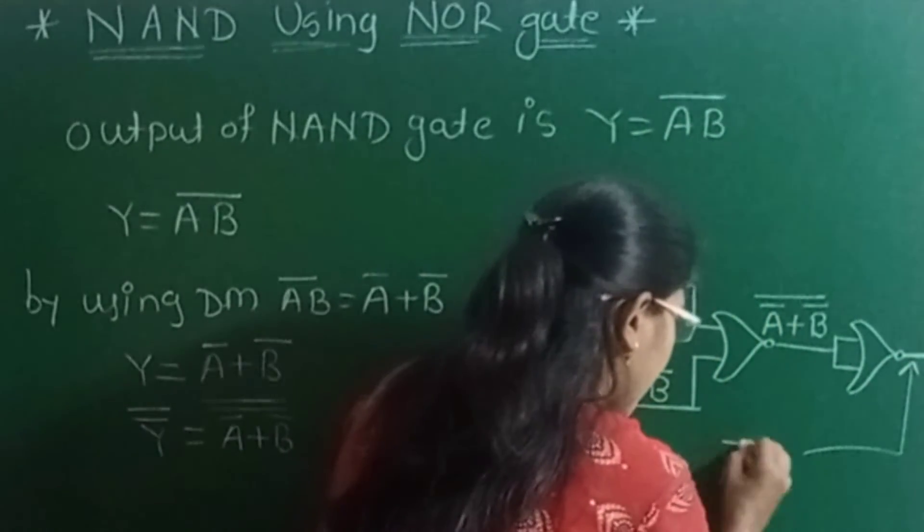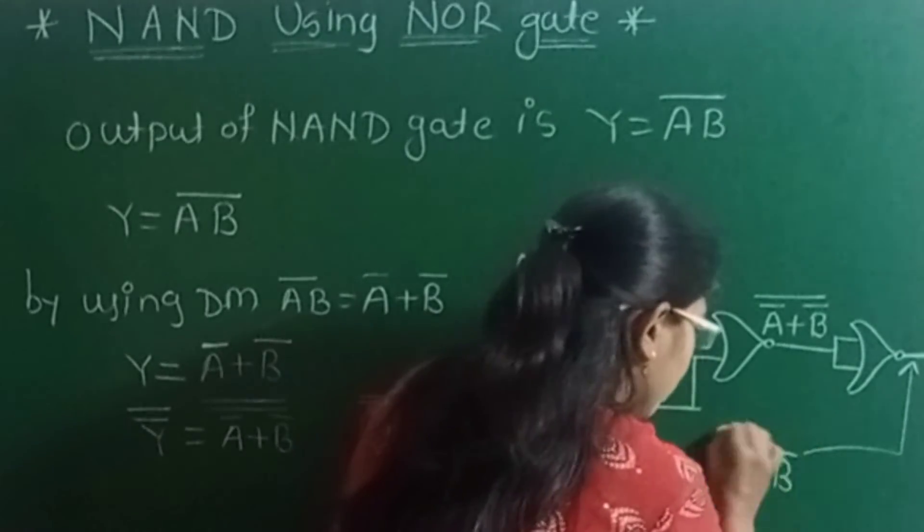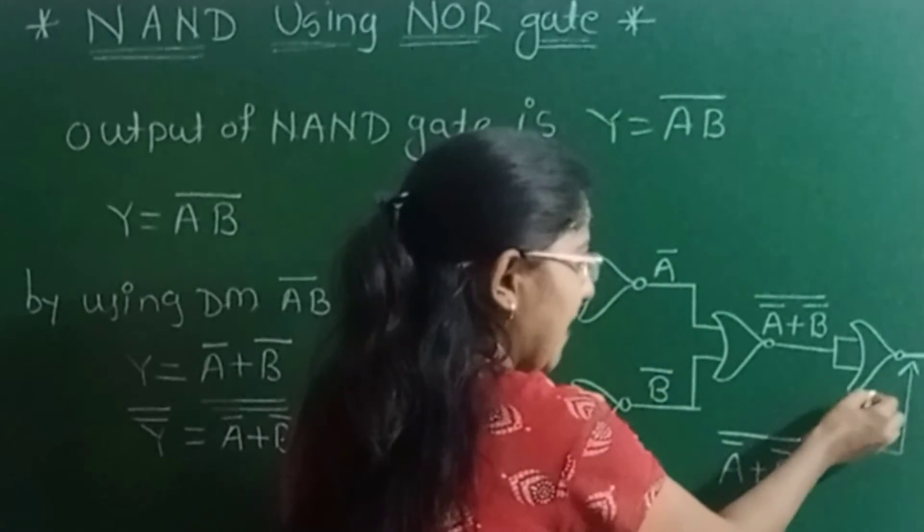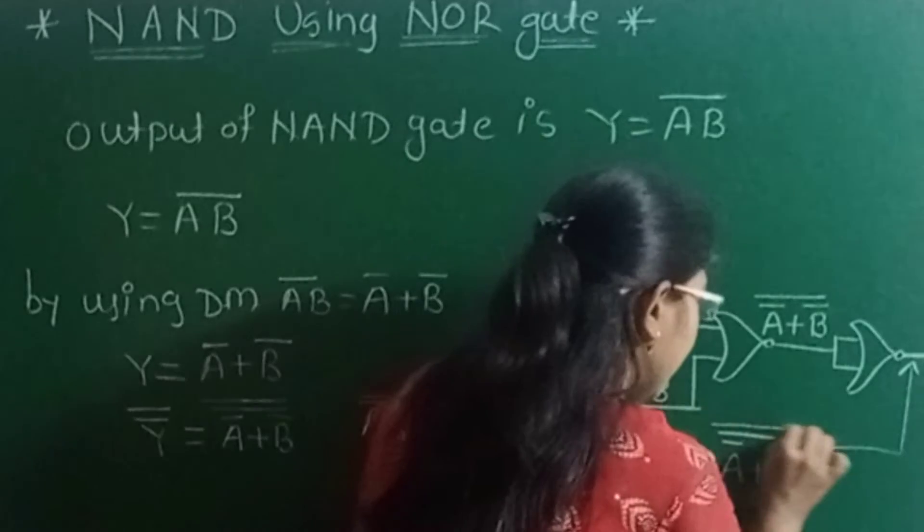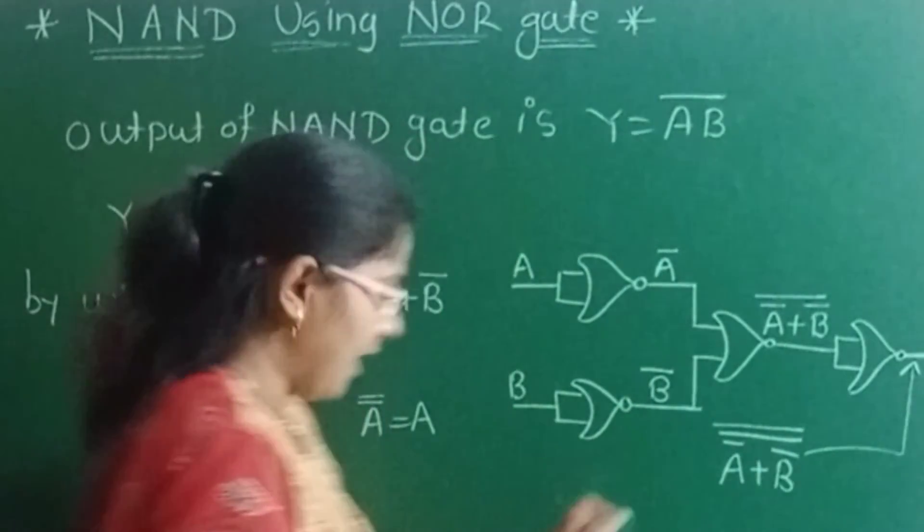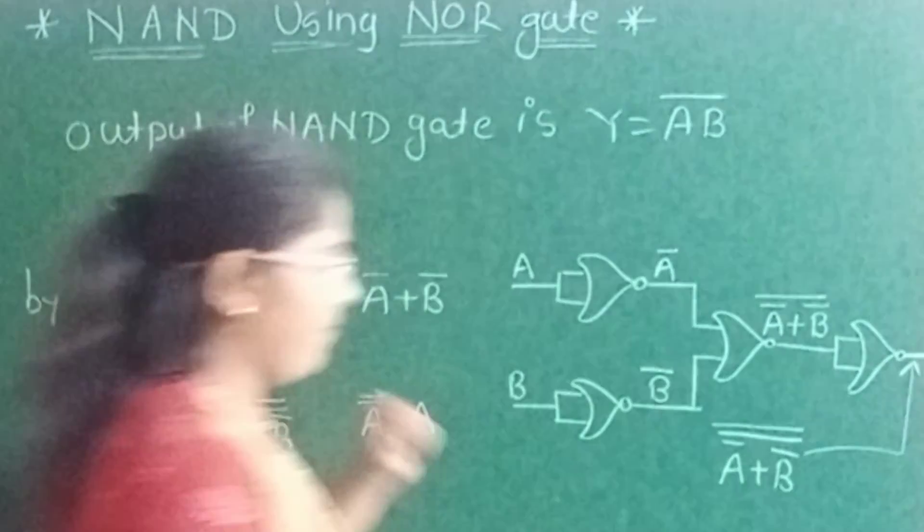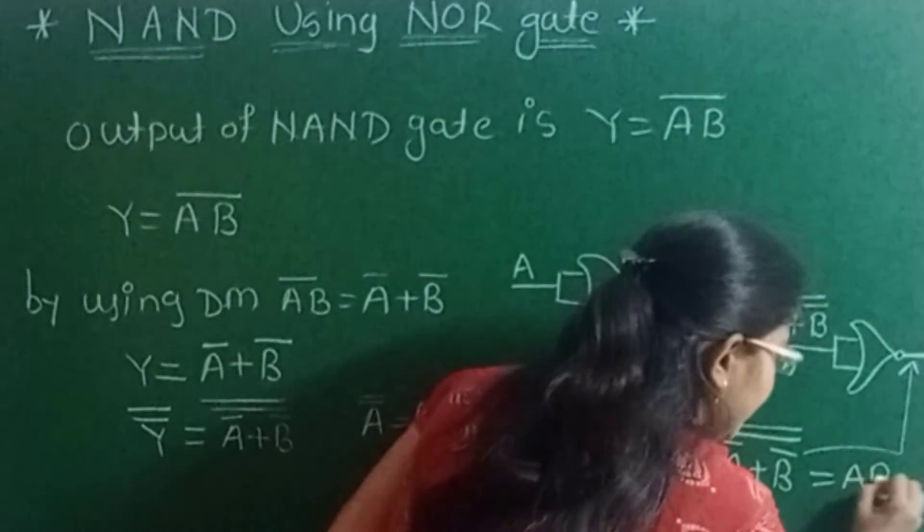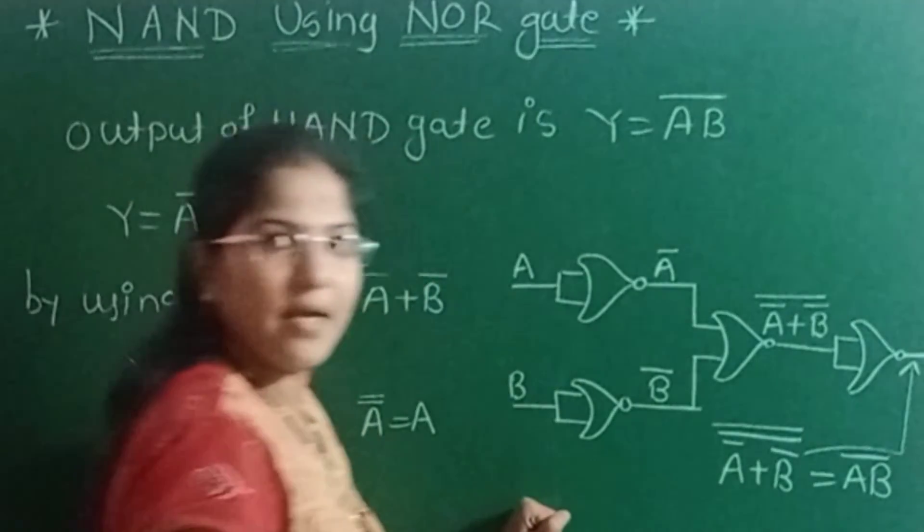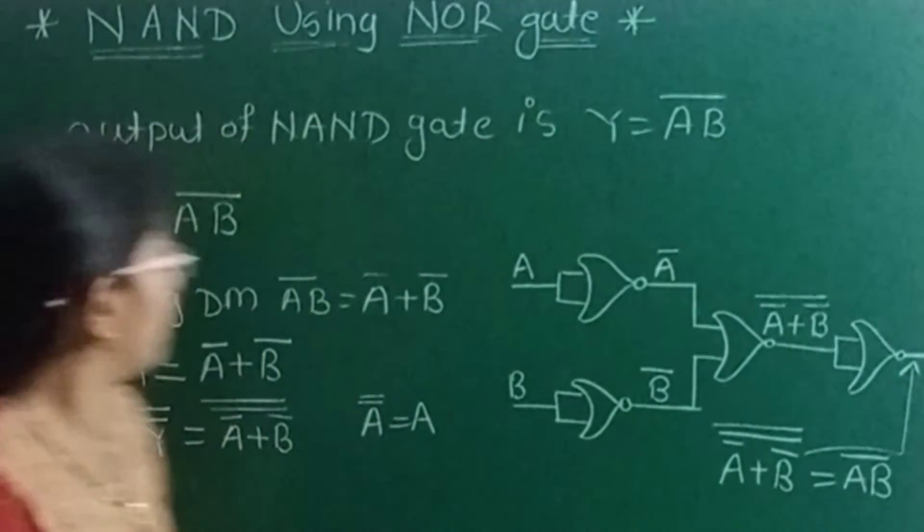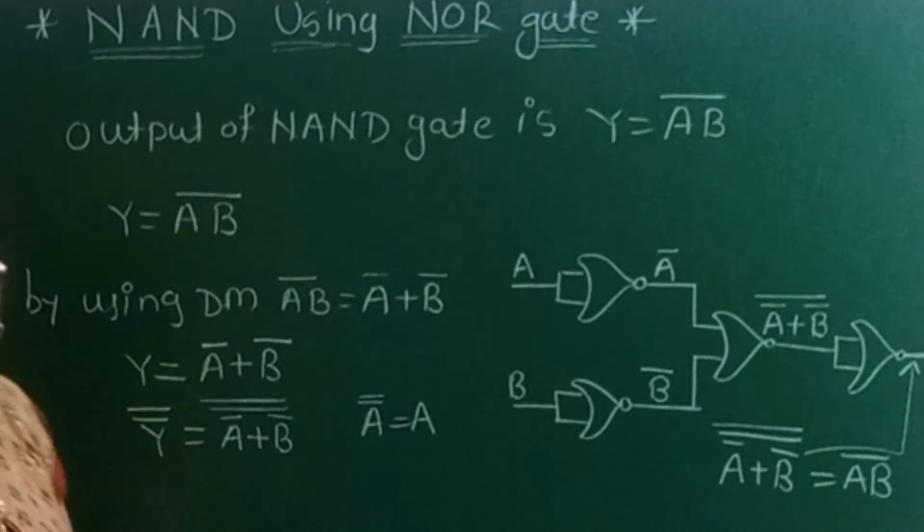Here I can draw that gate like this which is acting as the inverter, and the output will be, its input is A bar plus B bar complement. As this gate is acting as inverter, it will take complement of its input. This equation is nothing but AB complement, which is the output of the NAND gate.